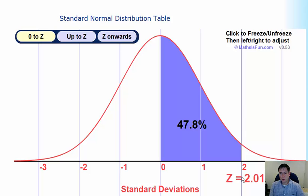so between 0 and 2 we have about 47.8%, and between 0 and 3 we have almost 50%.